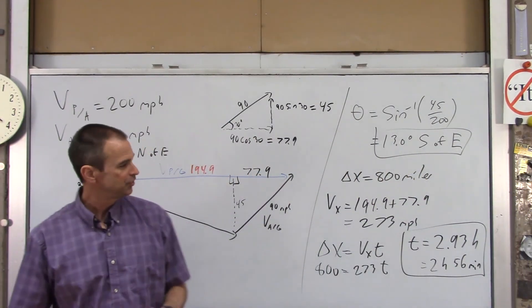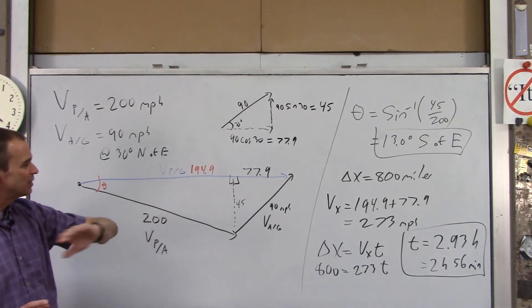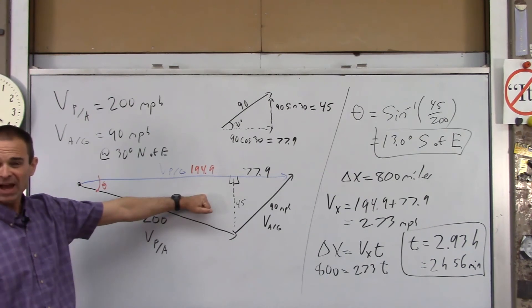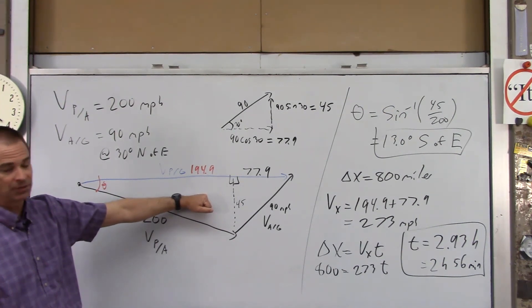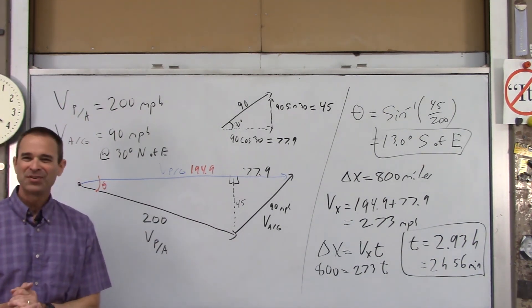So again, a couple quick notes. You definitely want to draw the vector triangle out nice and big. You want to label everything on that triangle that you can. And a little bit of geometry here, you have to figure out what your angles are, what your legs of the specific right triangles are. So I hope that was helpful, and thank you very much.